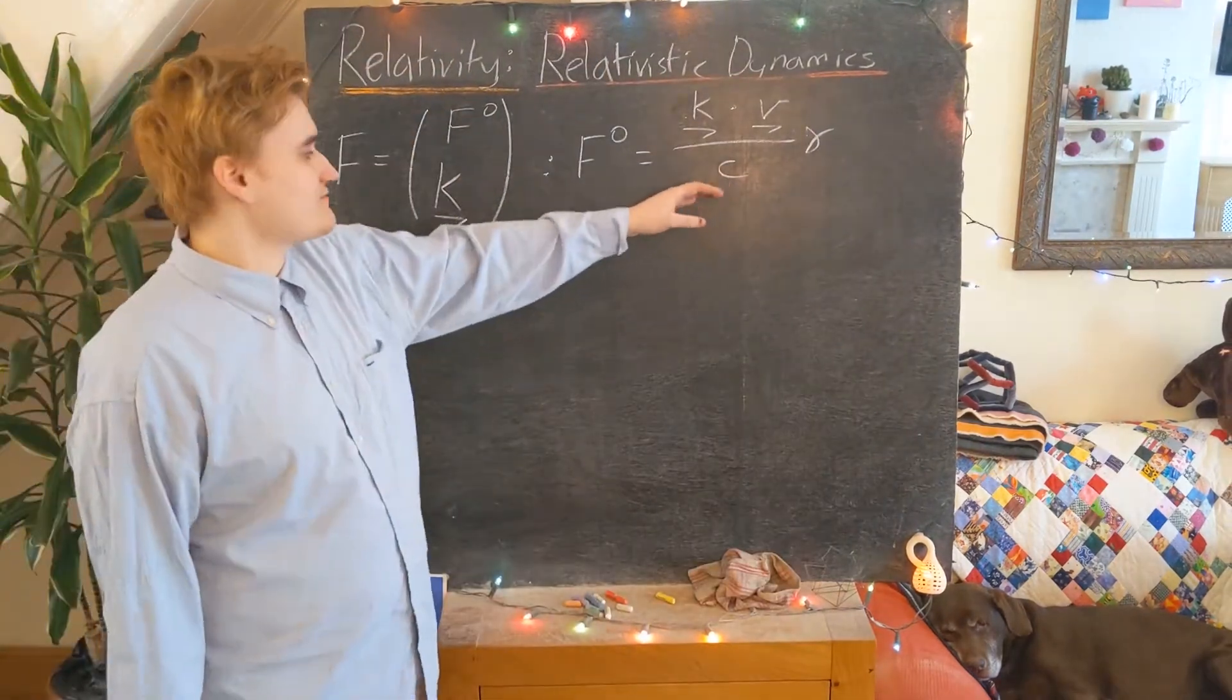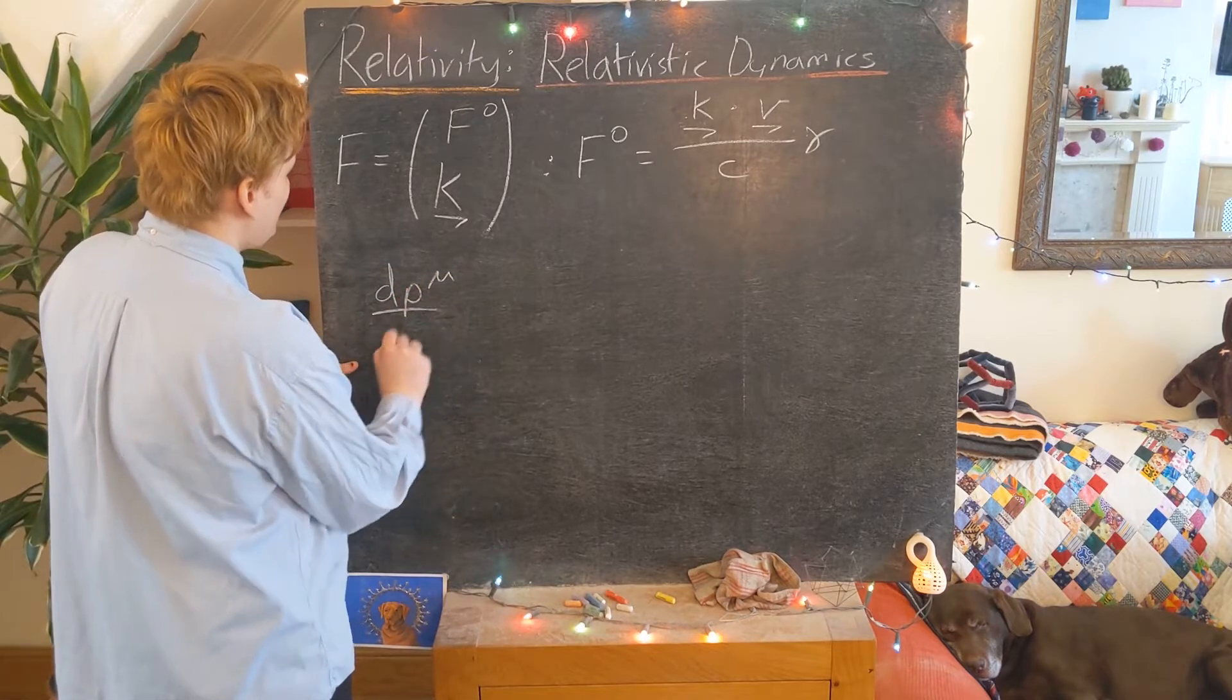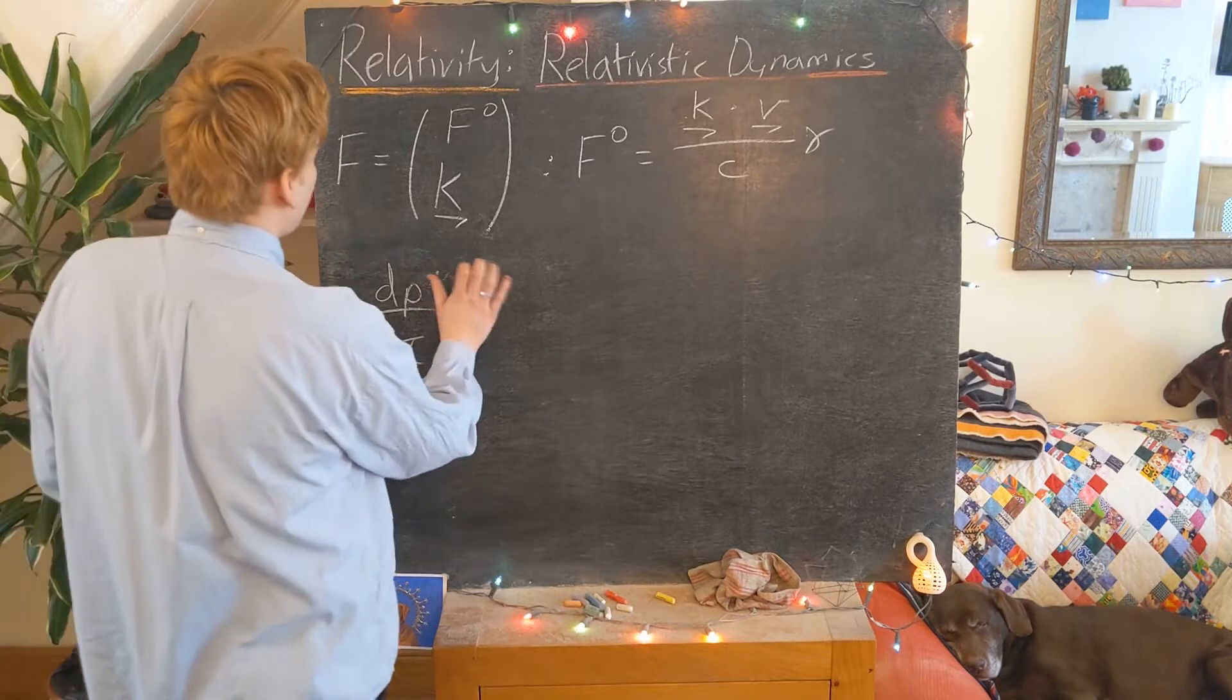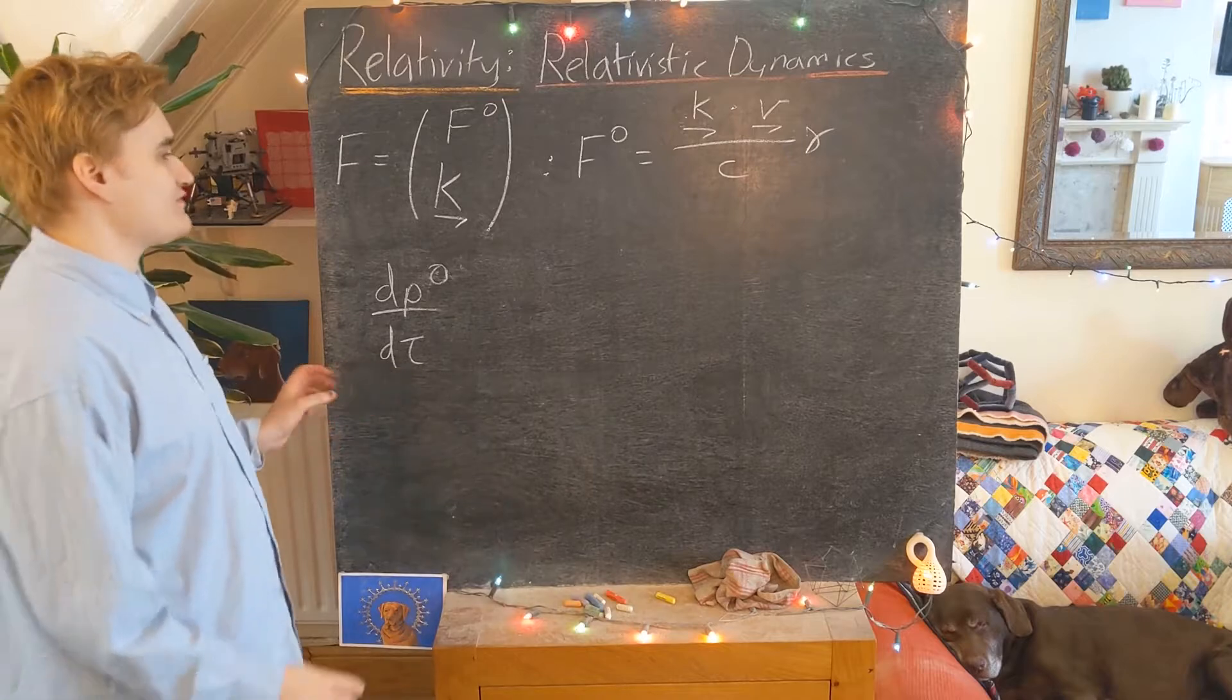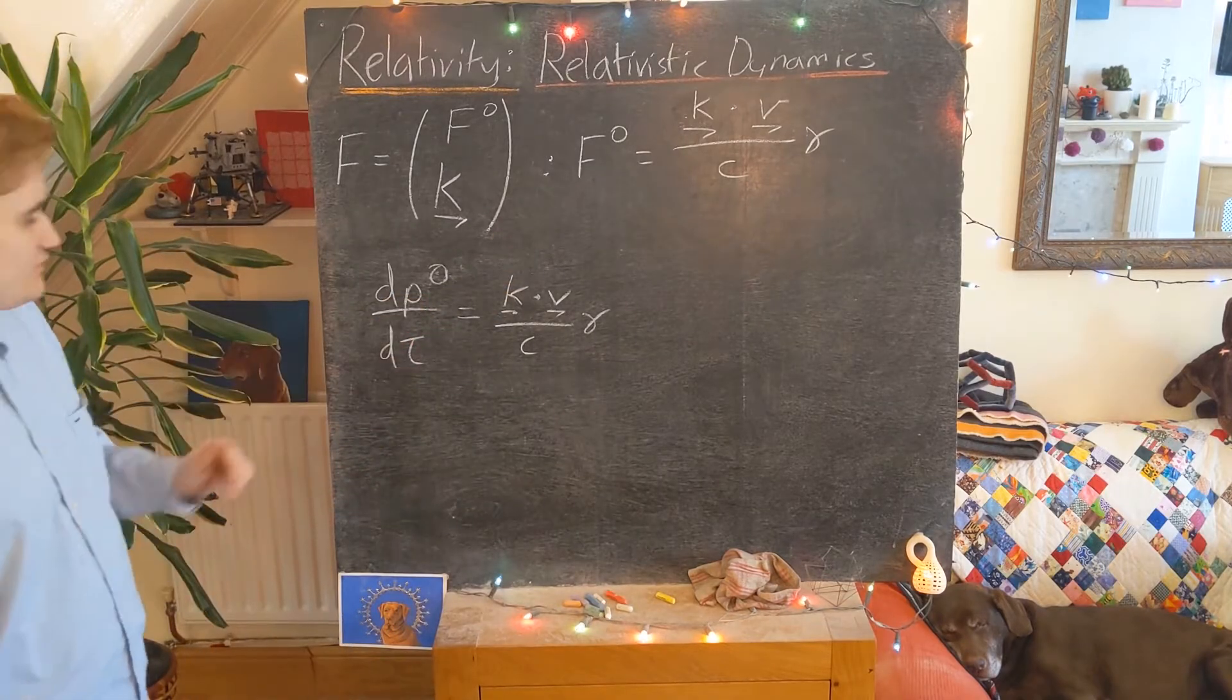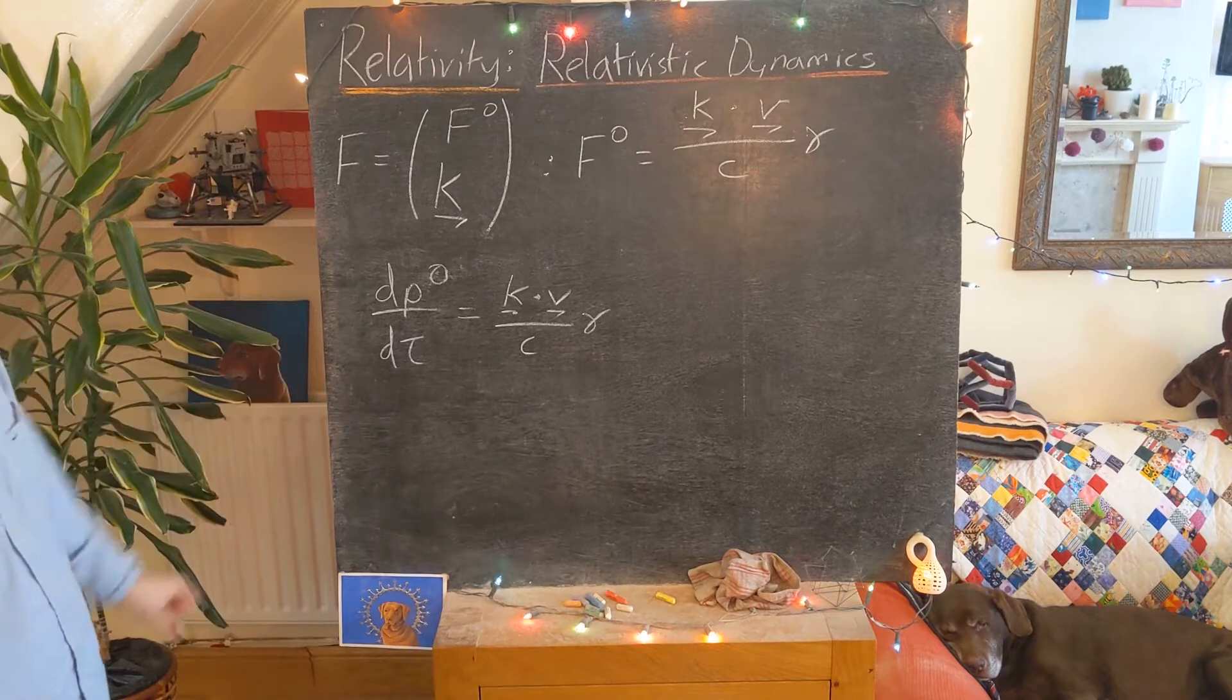To explore this in more detail, let's remember that we could realize the four-force as the derivative of our four-momentum with respect to tau proper time parameter. We can write that this F0 component is given by the derivative of this P0 component with respect to the tau parameter. Just substituting that F0 is dP0 derivative with respect to tau.